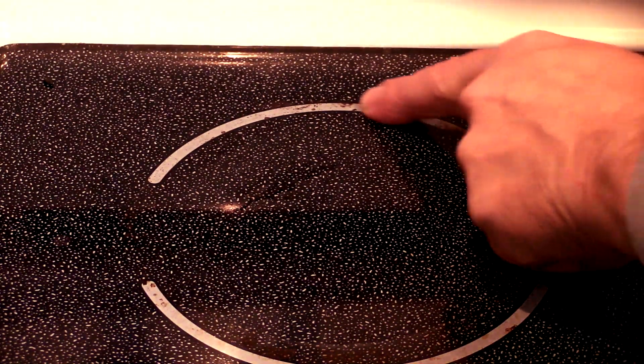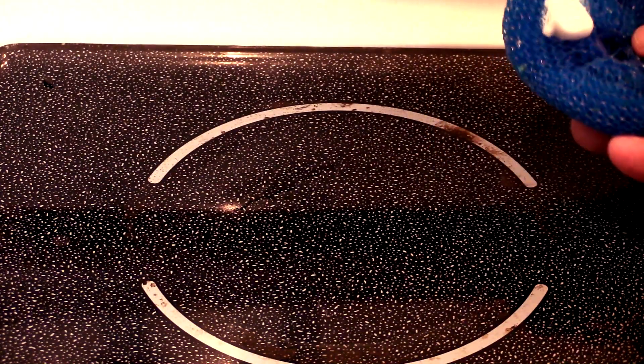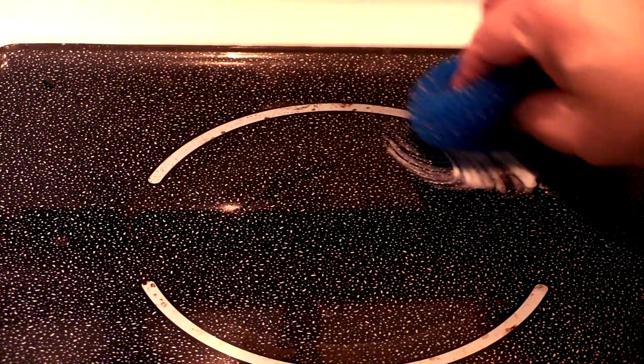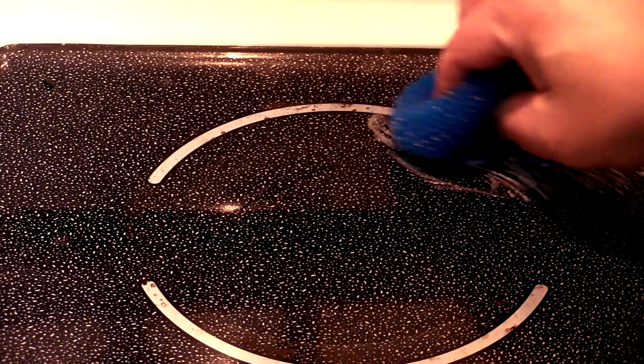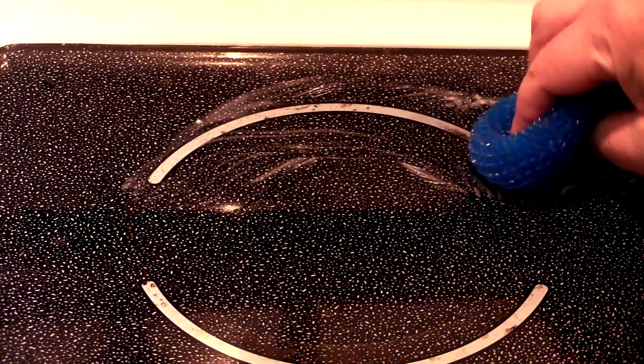Alright this burner has been bugging me for a long long time. I have tried every conceivable method known to man to see if we can get this burn mark off of here. Now I don't know if it's possible or not. But I'm going to take a little bit of Gojo and a plastic scrubber. And let's see what it does. Because nothing else would take that off. And we will see if this is going to do it.